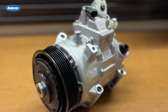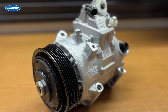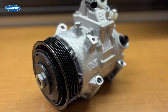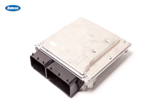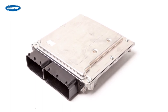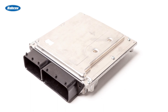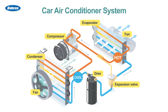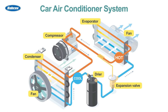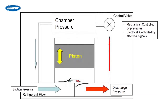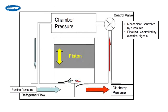Unlike a fixed displacement unit, a variable displacement compressor will change the angle of the swash plate to control the amount of refrigerant being discharged. This is determined by an electronic control unit, or ECU, that sends a signal to a switch in the compressor based on the engine and driving conditions. Depending on the output needs of the AC system, the compressor will adjust the displacement accordingly.